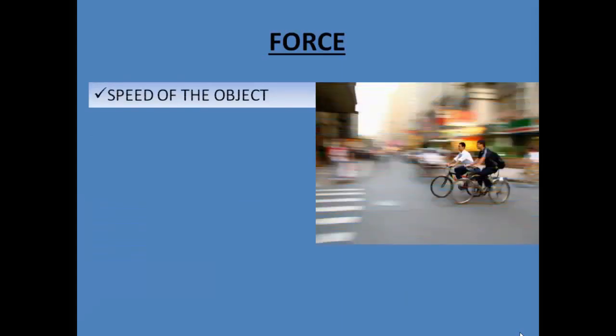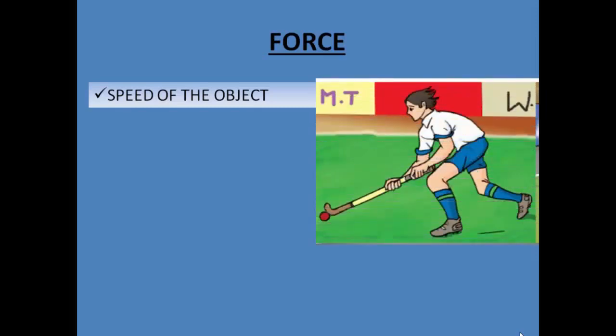A force can change the speed of an object. Here you can see two cyclists — one cycling with less force and the other applying a lot of force. The person applying more force will be ahead, gaining more speed. Similarly, a girl playing hockey: if she applies less force, the ball travels a lesser distance, but if she hits the ball very hard, it travels a much greater distance.